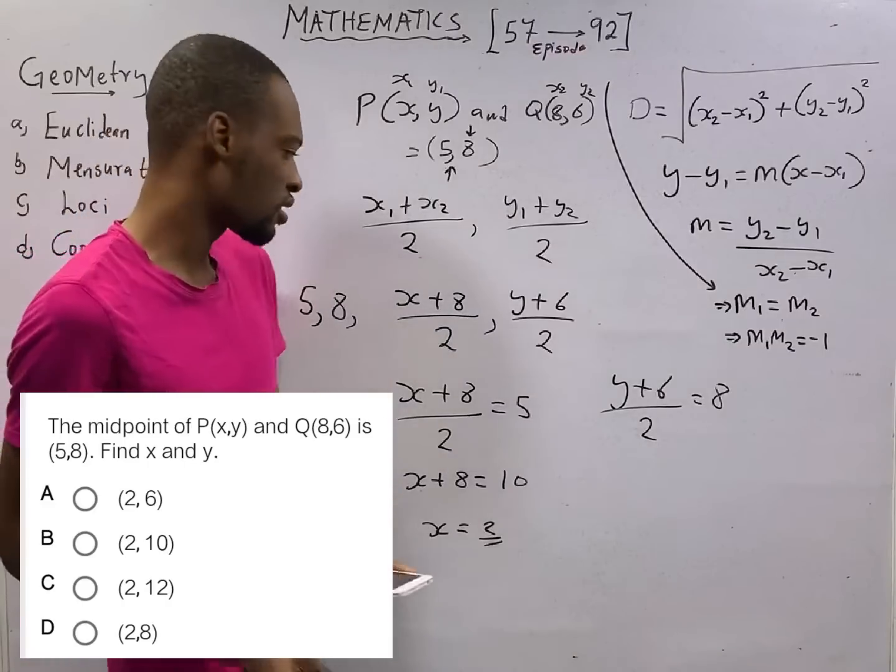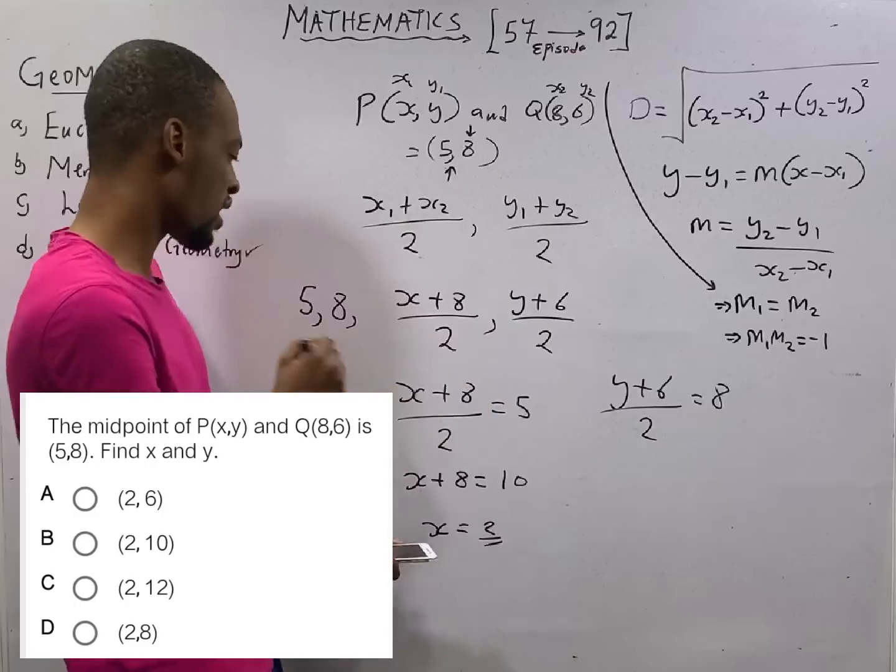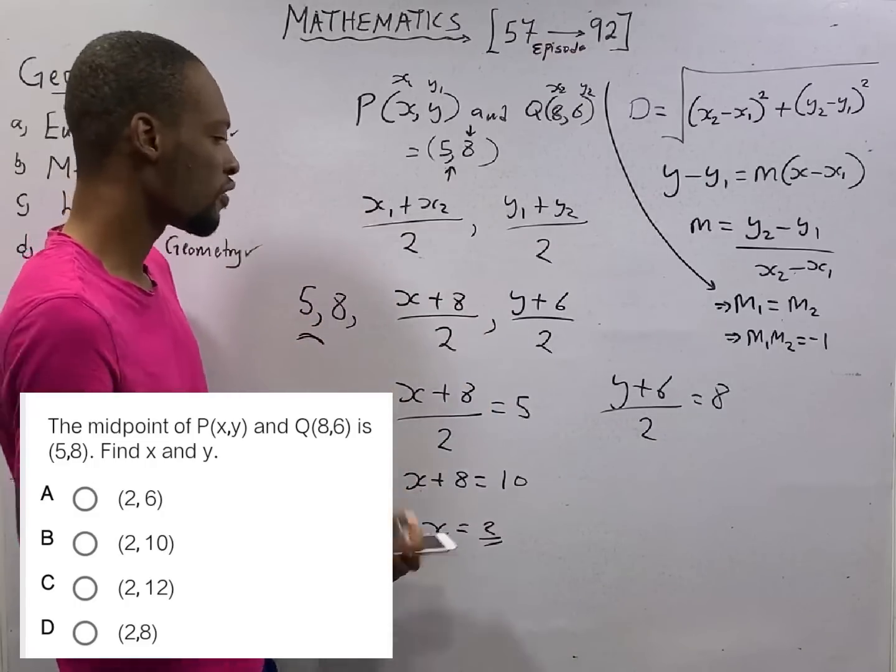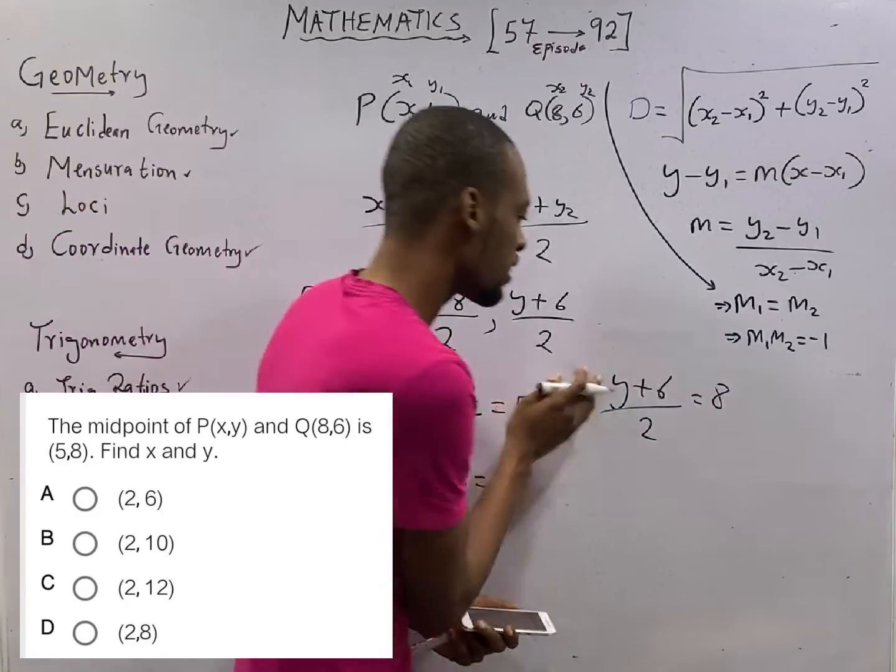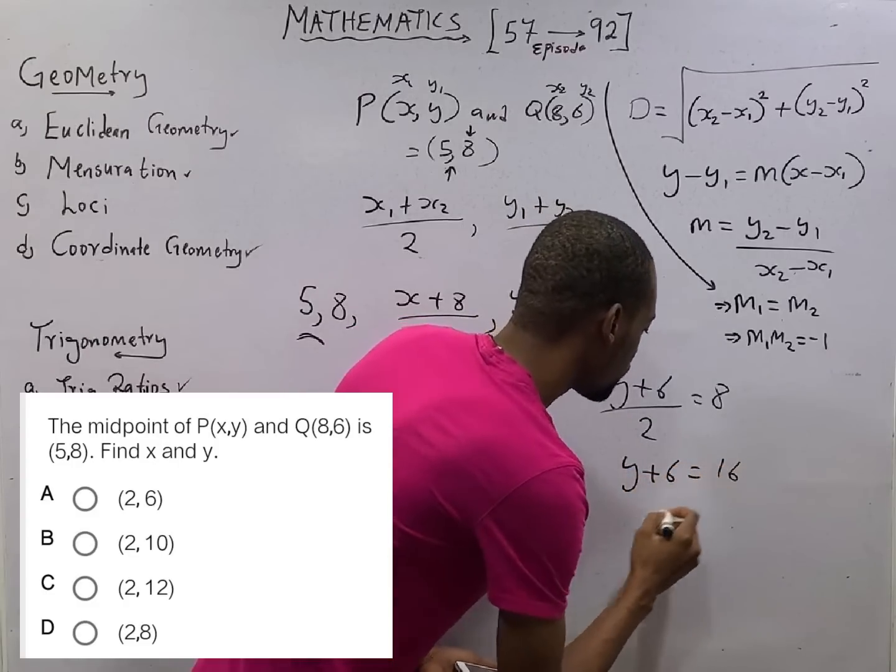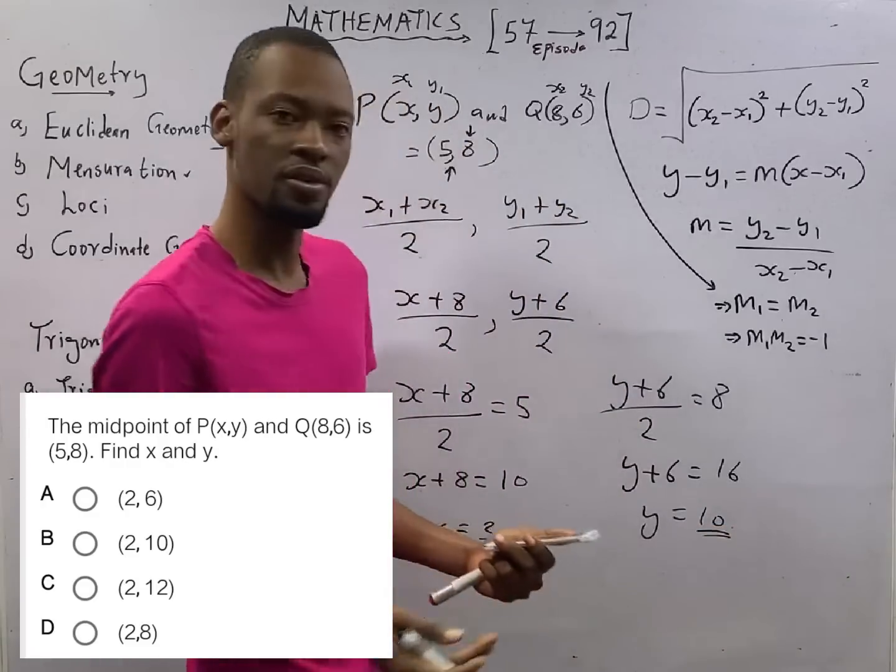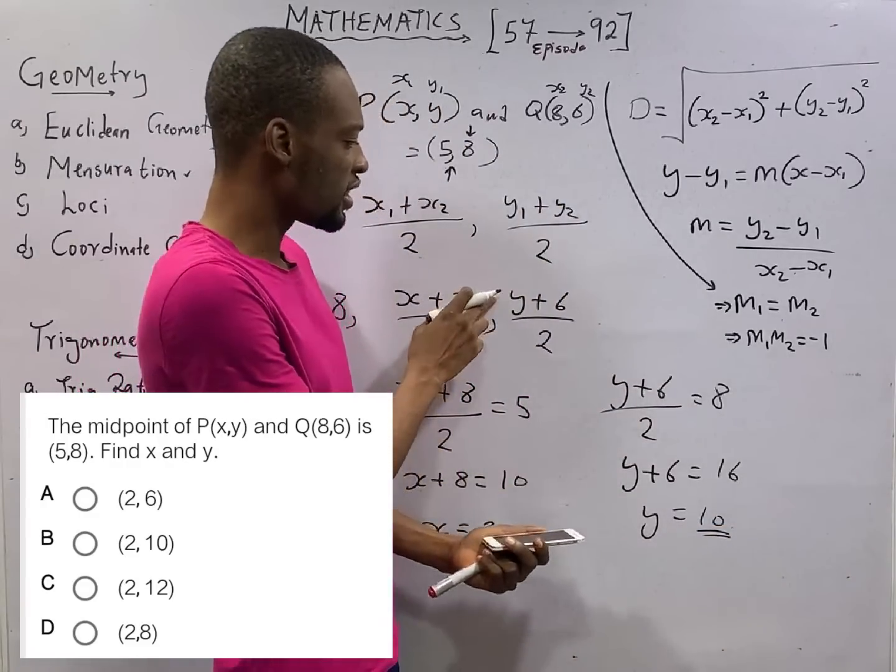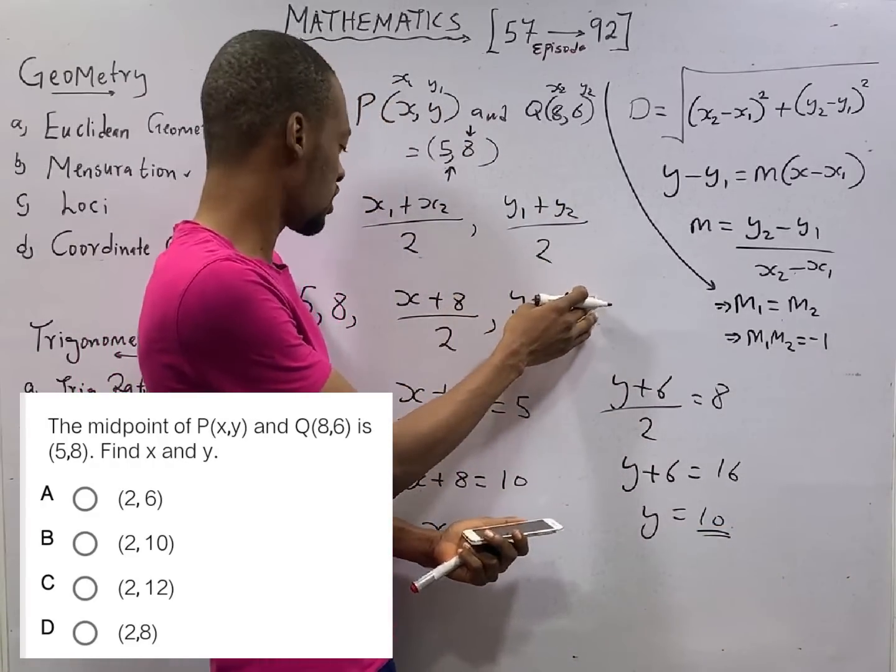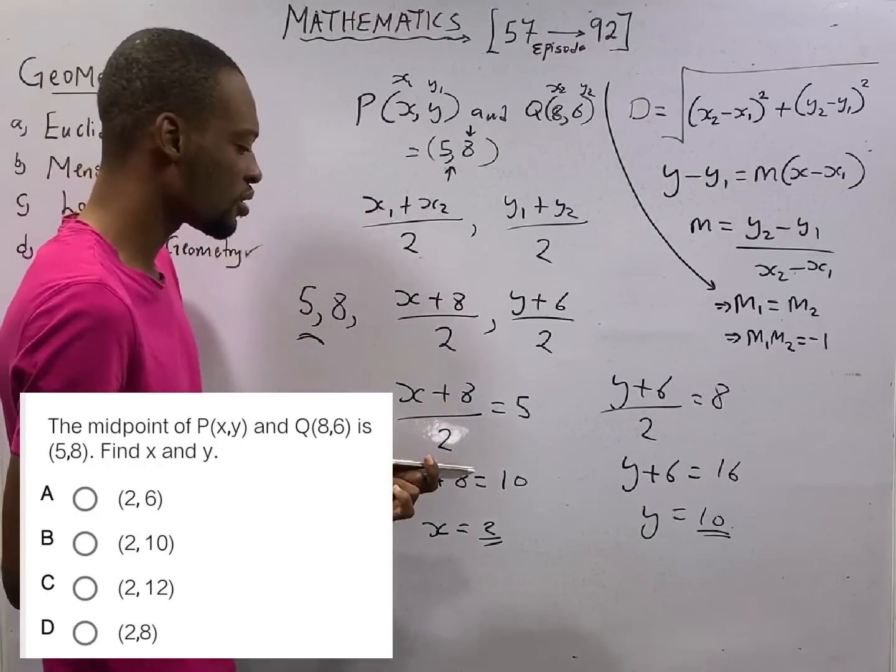You can actually confirm that if you put 2 here, 2 plus 8 is 10, divided by 2 is 5. You get the coordinate of x. For here, y plus 6 equals 16. Y equals 10, 16 minus 6. If you put 10 here, 10 plus 6 is 16, divided by 2, you get your 8 back. What are we even asked to look for? x and y. x is 2, y is 10. That's the correct answer.